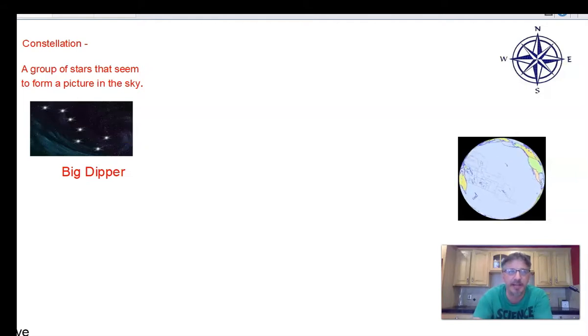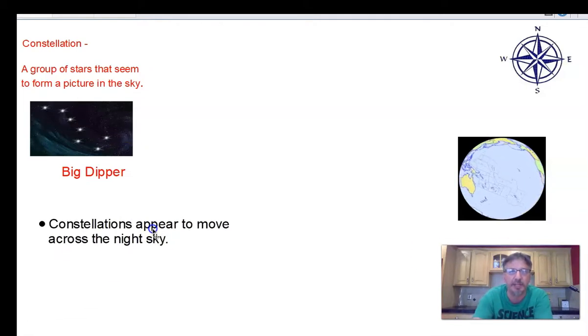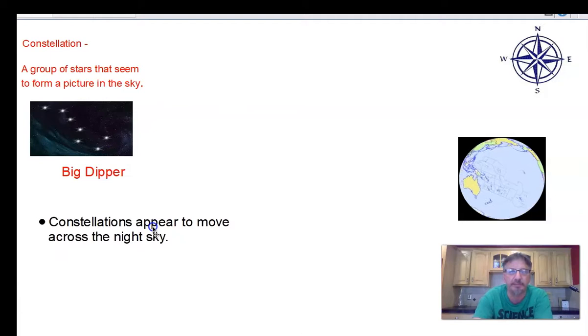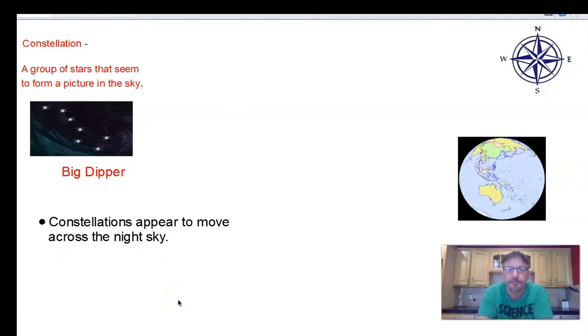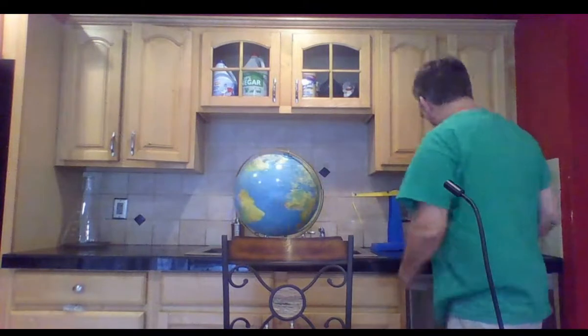So let's write that down as our last bullet for rotation. We learned that rotation is the time it takes for a planet to spin one time on its axis, and it defines a planet's day. It takes Earth 24 hours to spin one time on its axis. So now let's talk about revolution.